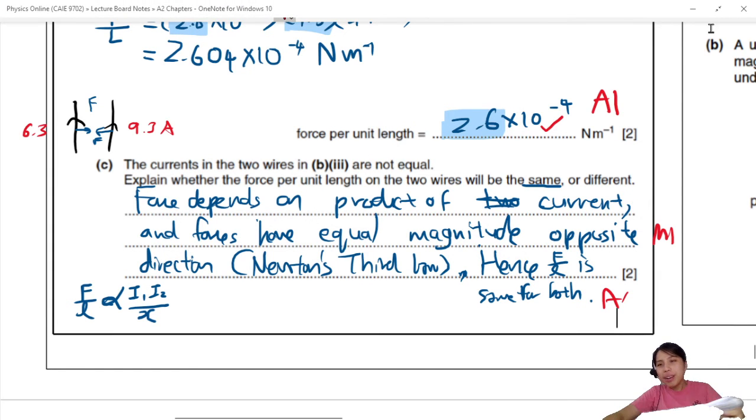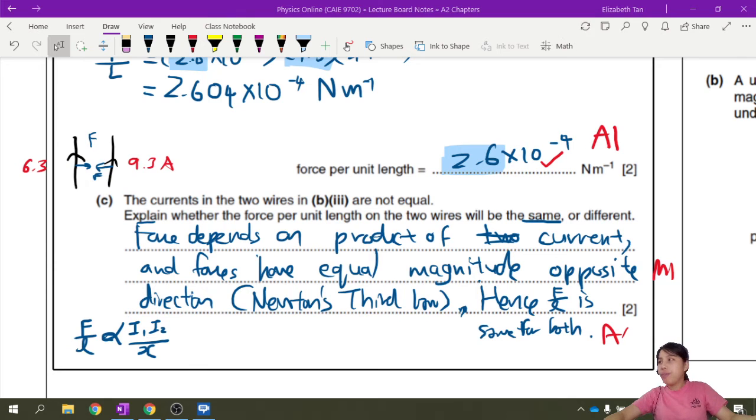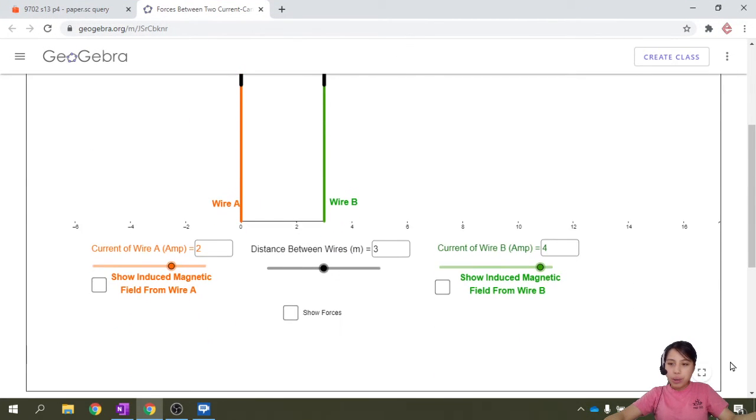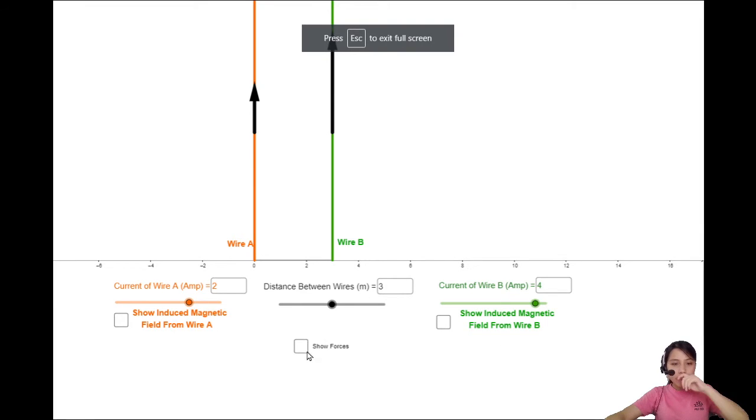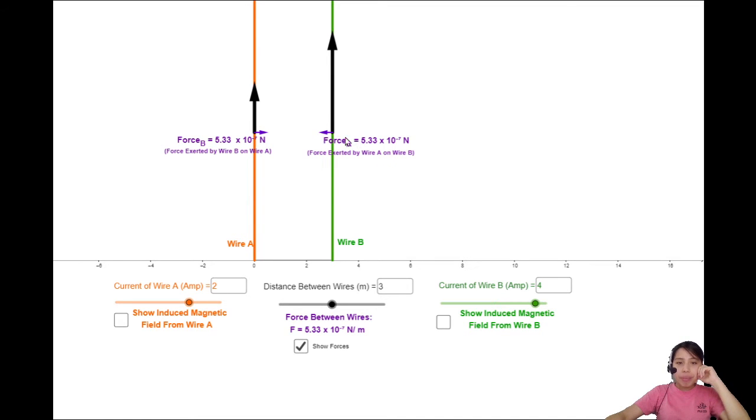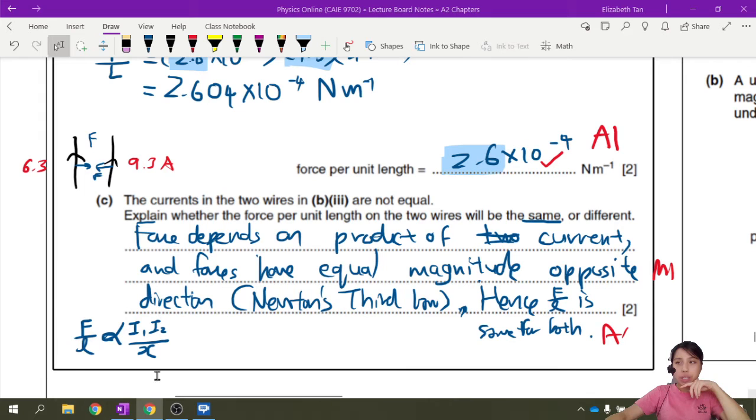Hence, this force per unit length is the same for both wires. First one is, you're talking about product of current and equal magnitude opposite direction. So that's the Newton's law. And then you conclude, hence F over L is the same. It's kind of hard to imagine why it's the same. It's just the math and behavior of it. One wire can have small current, the other one very big current. The force will be the same. So if you increase one of the current, the force will increase, but it will increase for both, because you are still multiplying both at the end of the day, both currents. Remember the relationship between the force between two parallel wires. That is the relationship to remember.